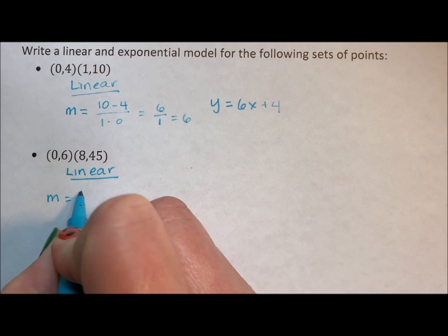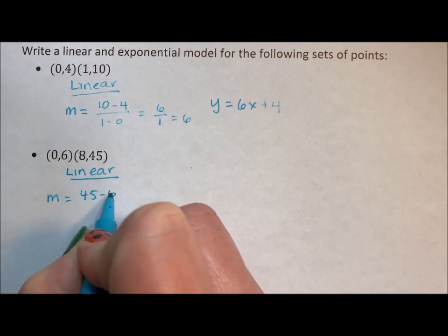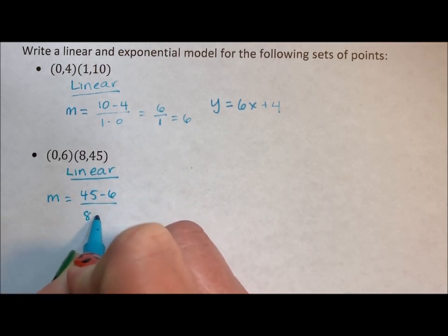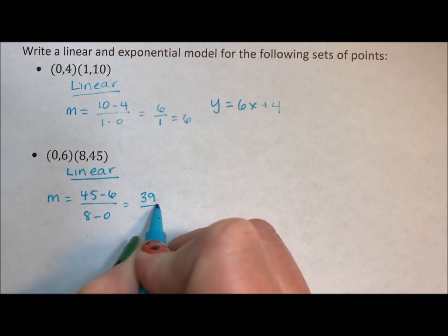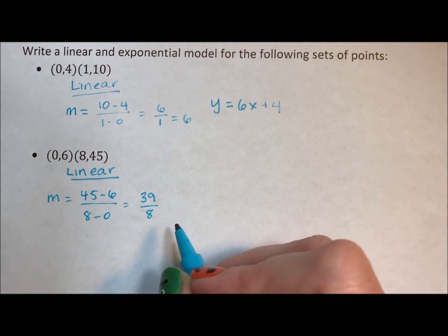So slope is 45 minus 6 over 8 minus 0. So we have 39 over 8. We could go to decimal, but we'll leave it as a fraction.